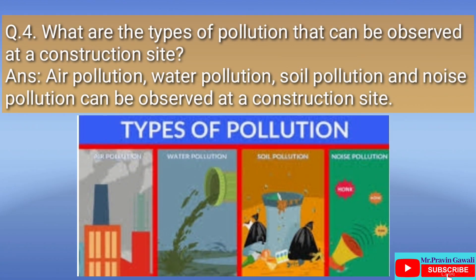Question number four: What are the types of pollution that can be observed at a construction site? The answer is air pollution, water pollution, soil pollution and noise pollution can be observed at a construction site.